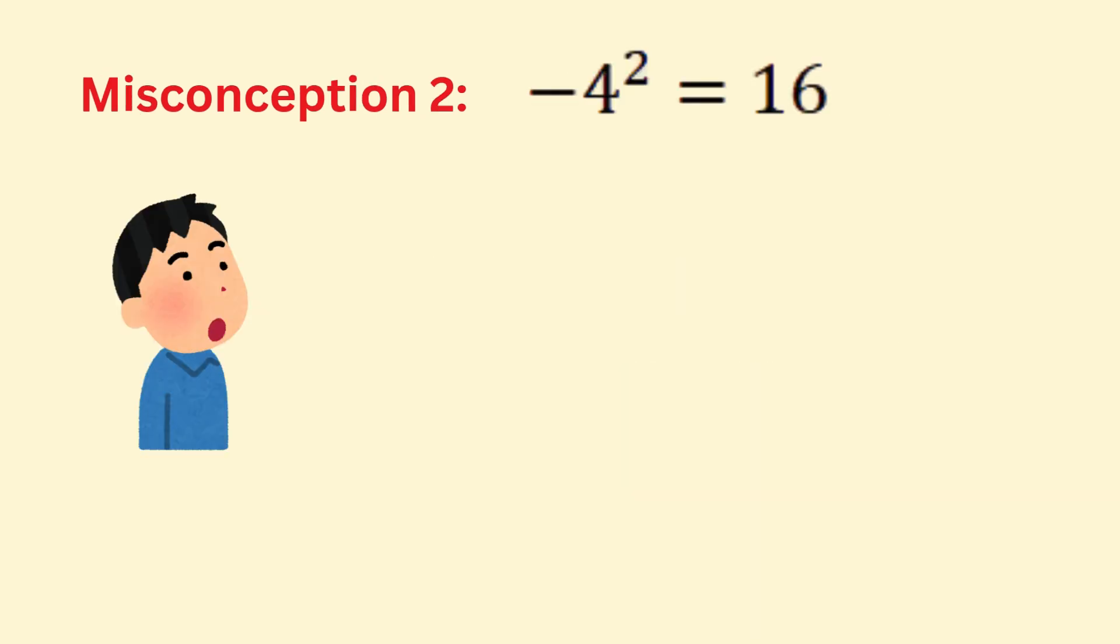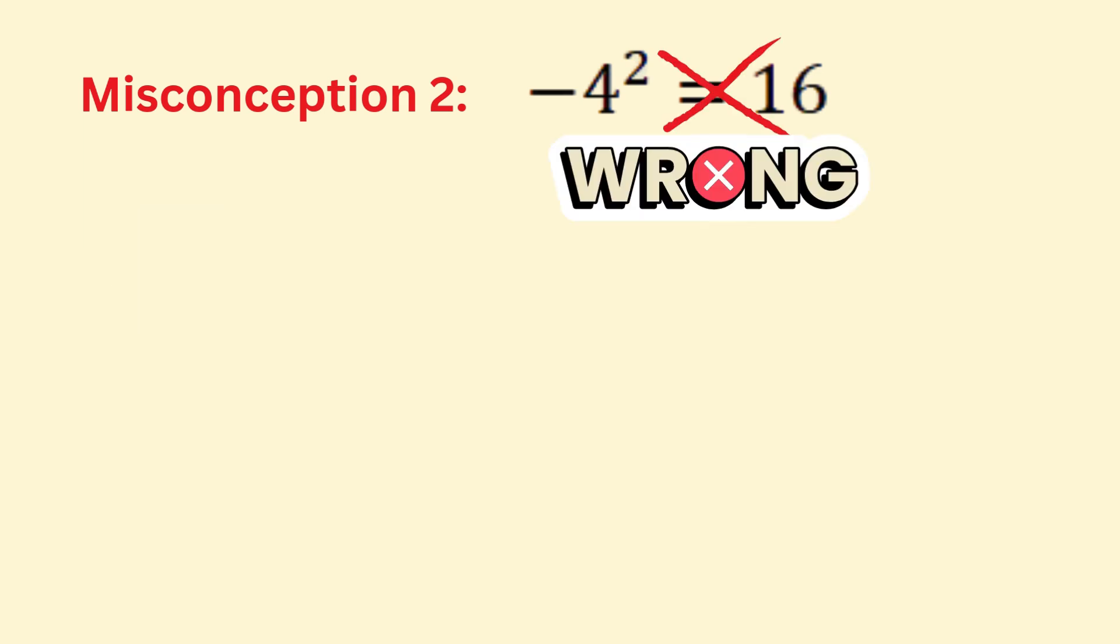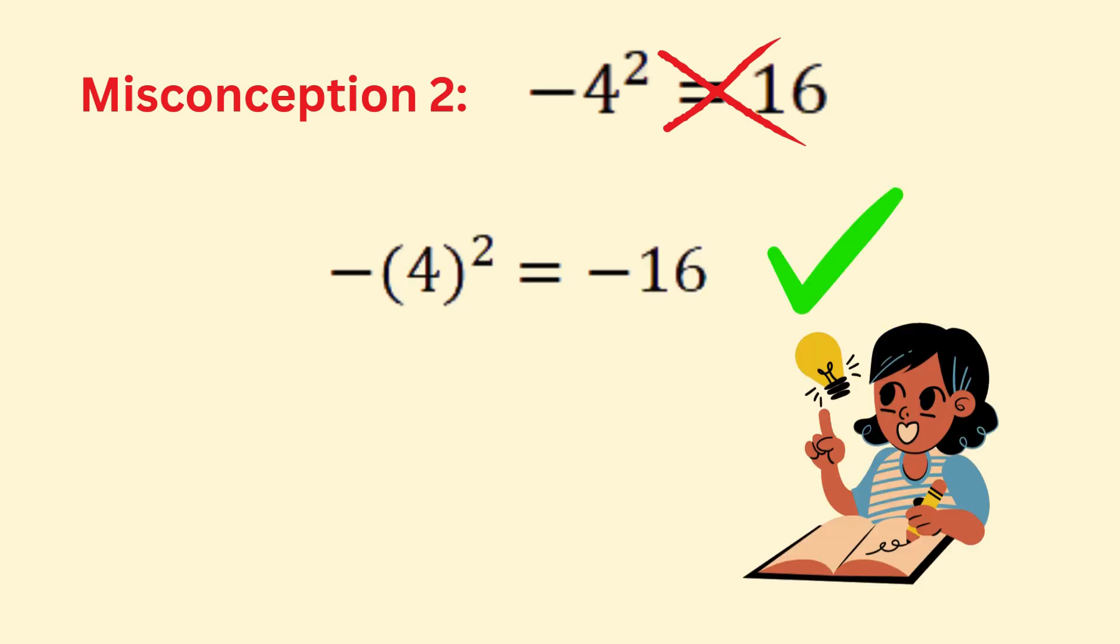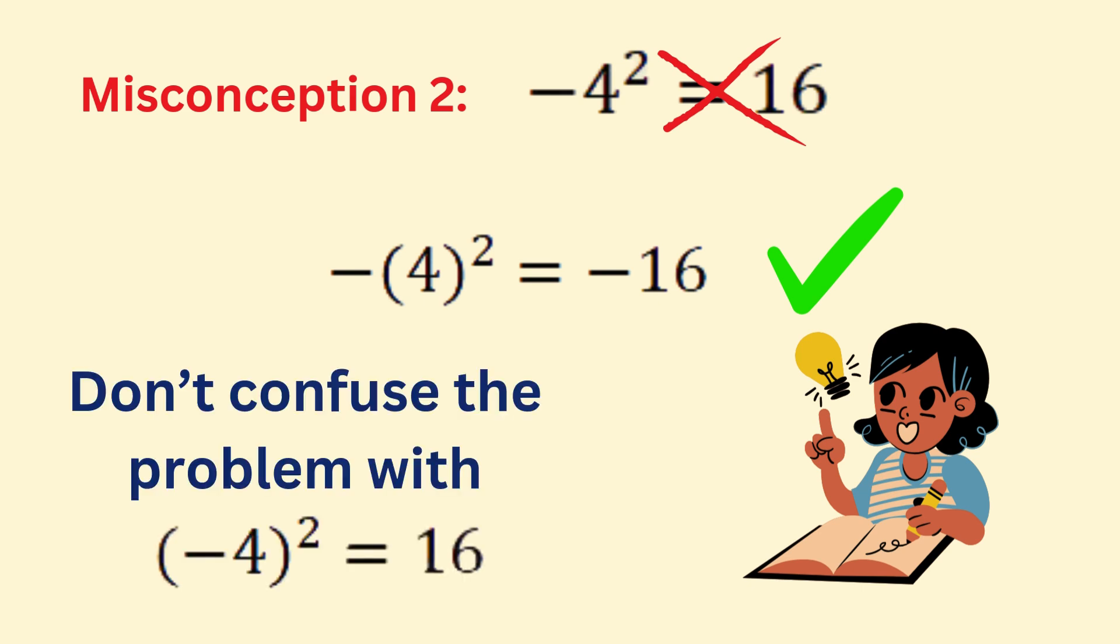This is a classic mistake where students misunderstand the order of operations. The base here is 4, not negative 4. So -4² means the negative sign is not part of the base. It should be interpreted as -(4²), which equals negative 16. Key tip: do not confuse this with (-4)².